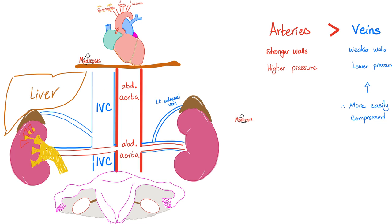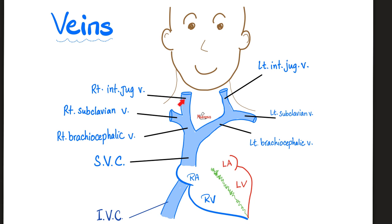This is the arterial story. As for veins, they collect blood from blood capillaries and from lymphatic vessels — very important. Eventually your veins end up in the right atrium, which is part of the right heart.